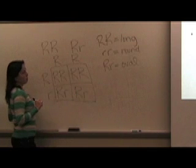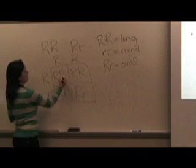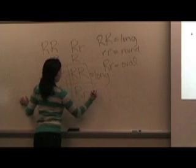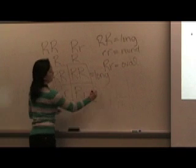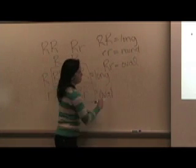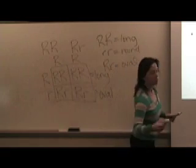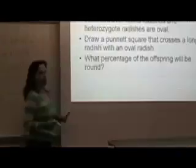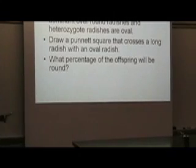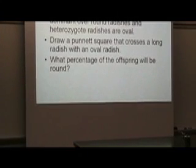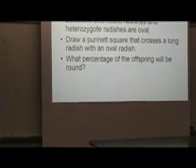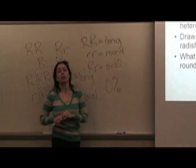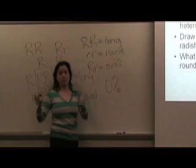And here are our offspring. We have two that are homozygous dominant, so they will both be long. And we have two that are heterozygous, so they will both be oval. Let's see what question it's asking us. What percentage of the offspring will be round? Well, we just said that 50% of them are long and 50% of them are oval, so the answer is 0% are round.